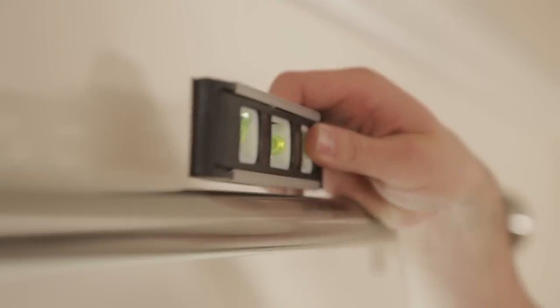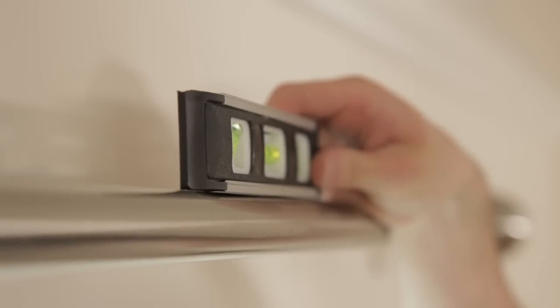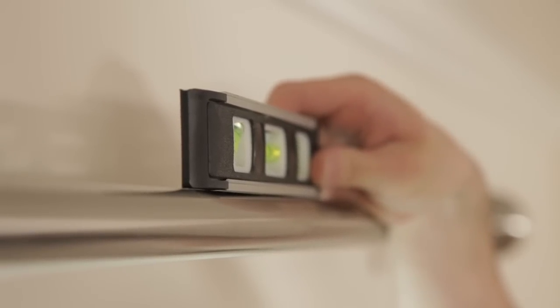Floors and ceilings can sometimes be uneven, so make sure your curtain pole is level with a spirit level. If it isn't, you'll have to make some adjustments before proceeding.